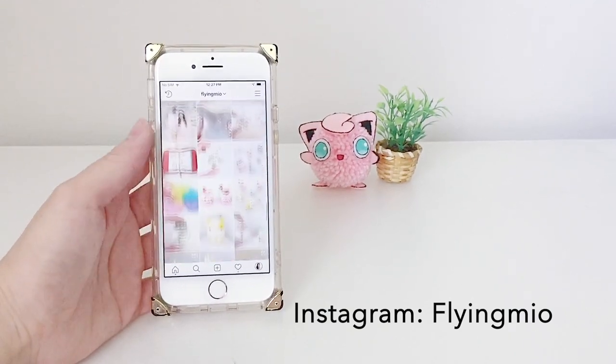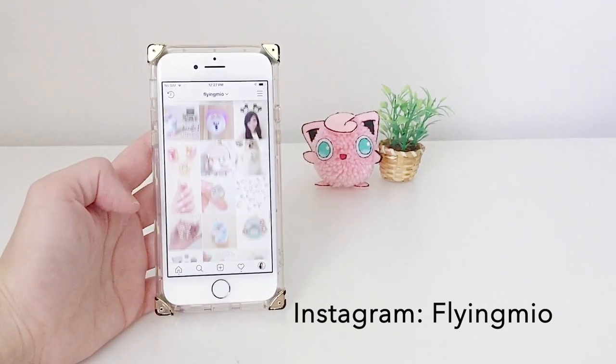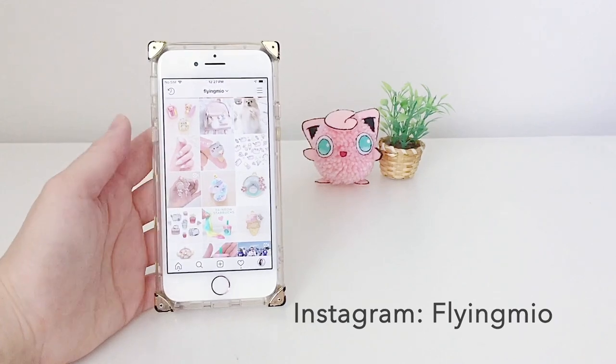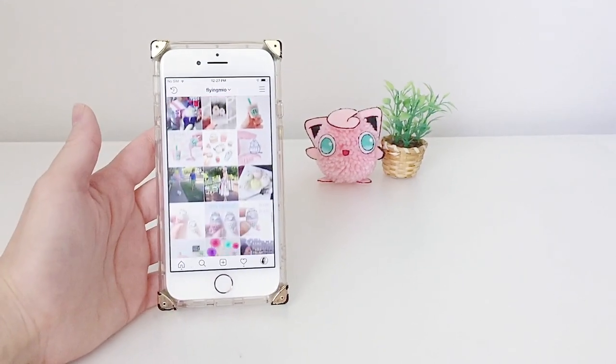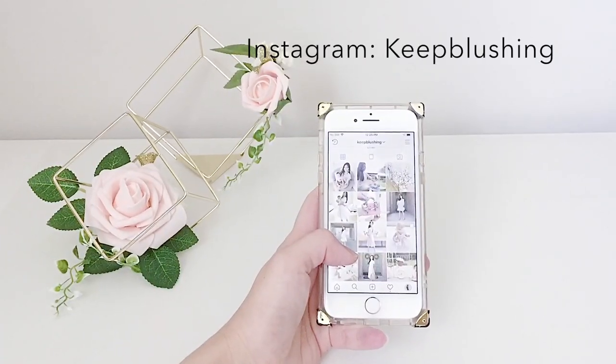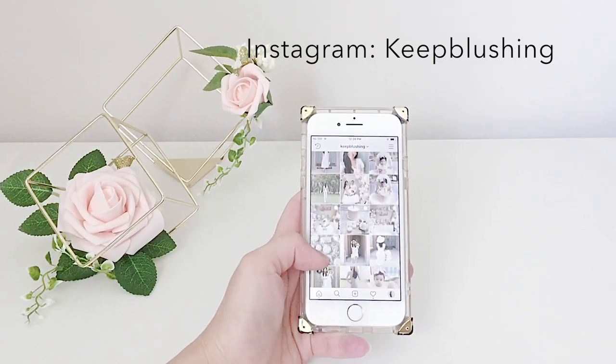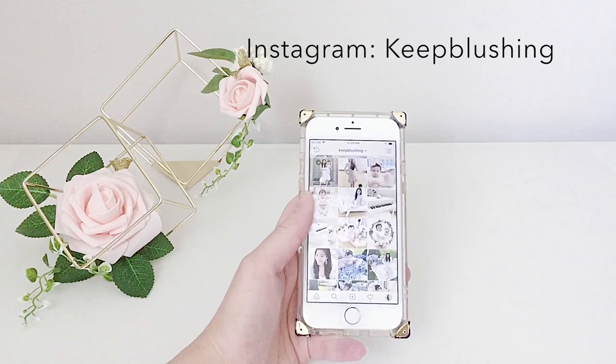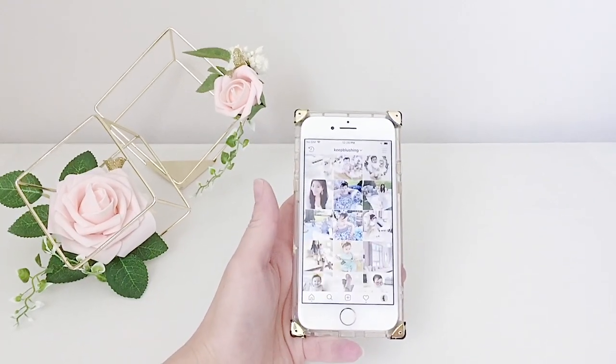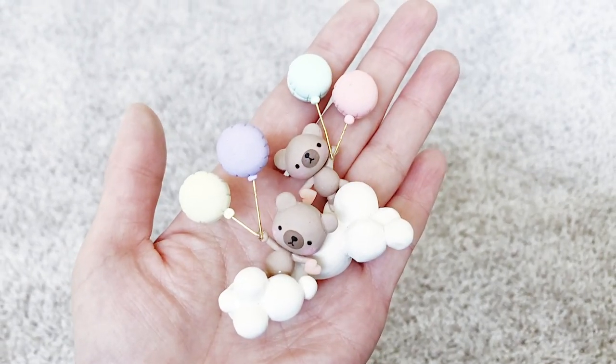My Instagram account, FlyingMio, is my crafting account. It has pictures of previous crafts that I created and more pictures of things that are to come. If you want a little more frequent updates, you can check out my personal account. It's called Keep Blushing. It has videos of my day-to-day life and a few things that I've also created here and there. Thank you guys so much for watching and I will catch you guys soon. Happy crafting!